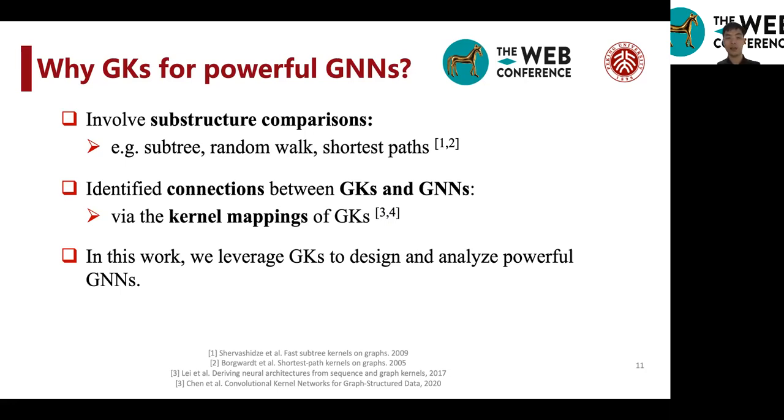Another important property is that there have been identified connections between graph kernels and graph neural networks. Basically, the connection is identified via the kernel mappings of graph kernels. And there are some references.